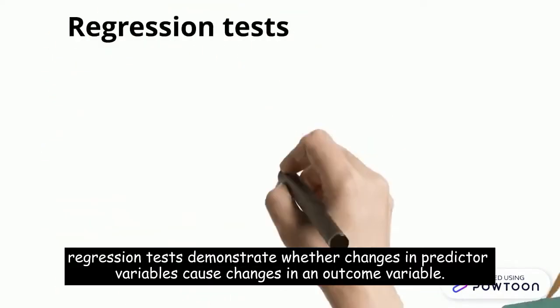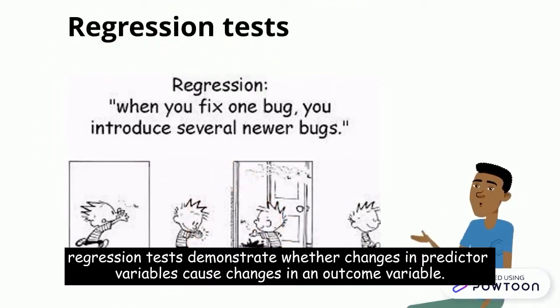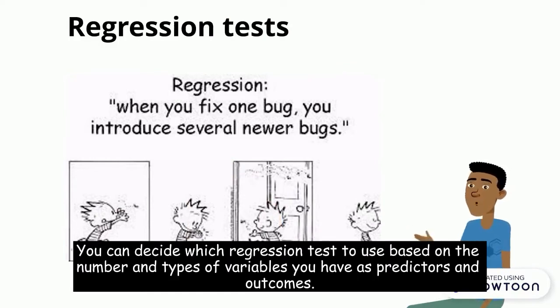Last but not least, regression tests demonstrate whether changes in predictor variables cause changes in an outcome variable. You can decide which regression test to use based on the number and types of variables you have as predictors and outcomes.